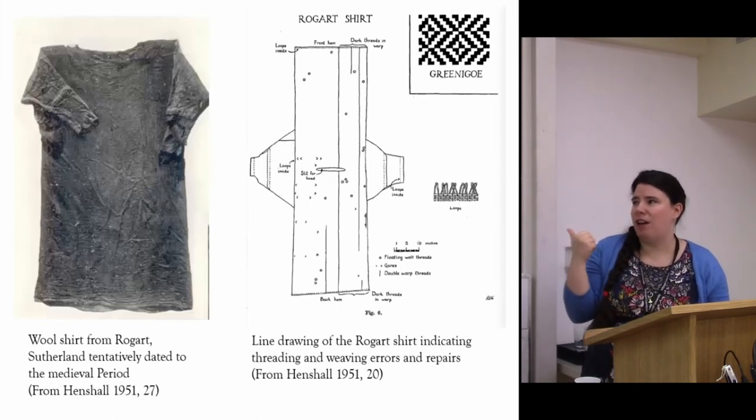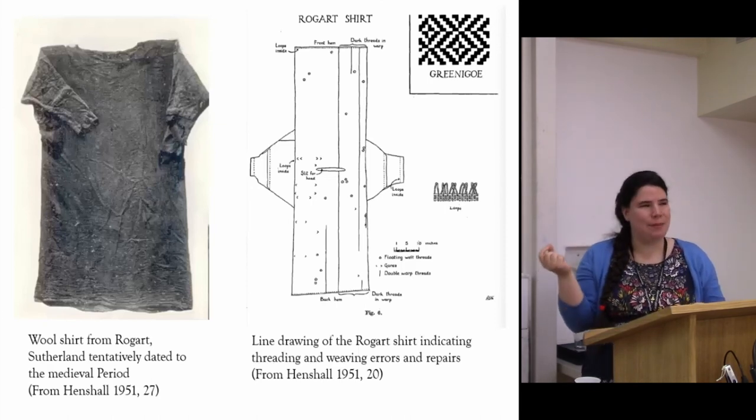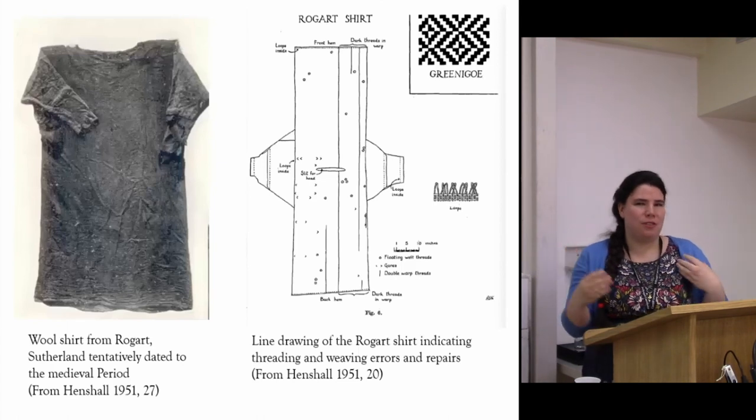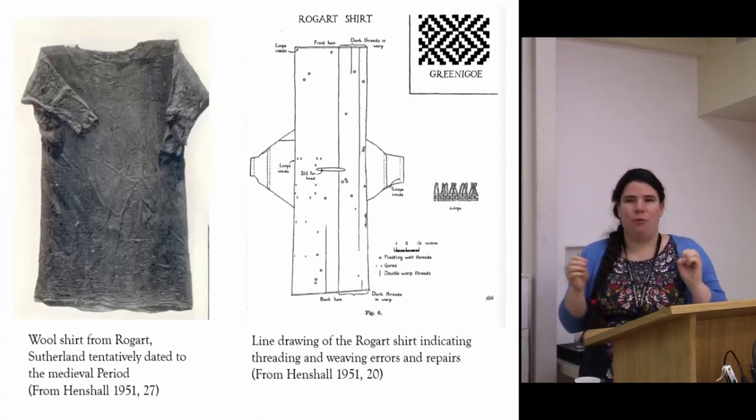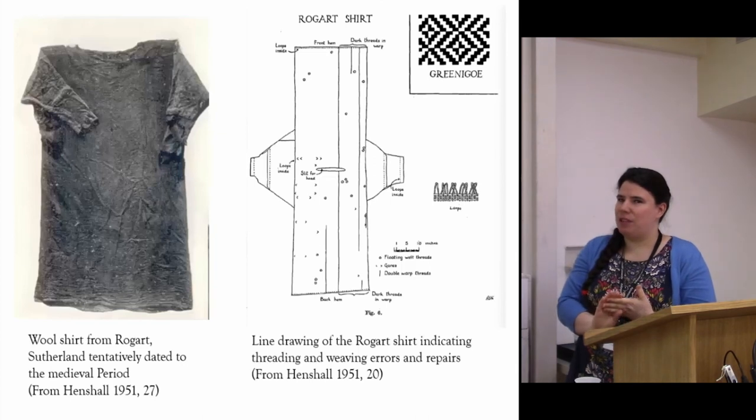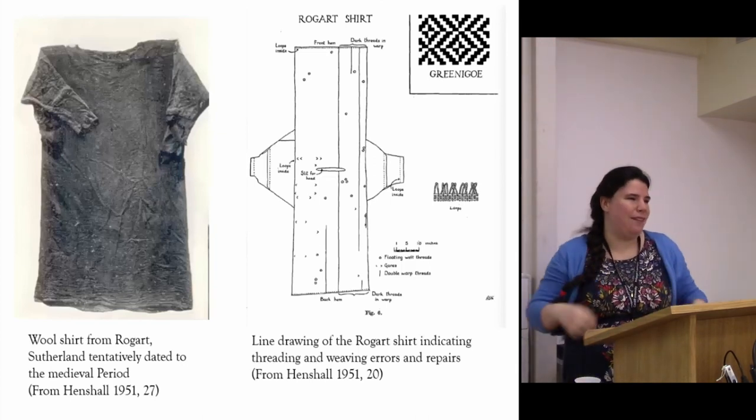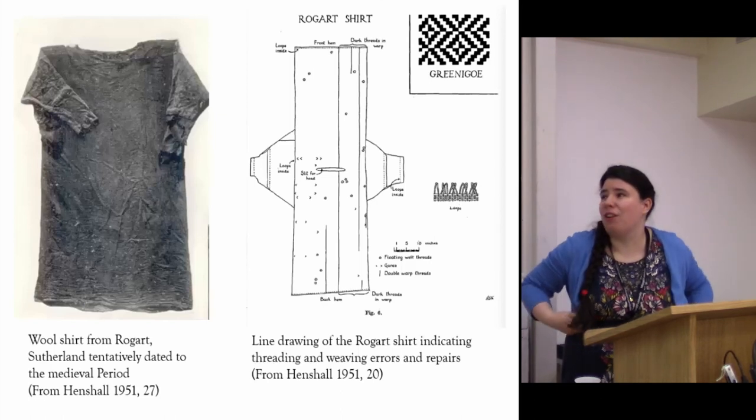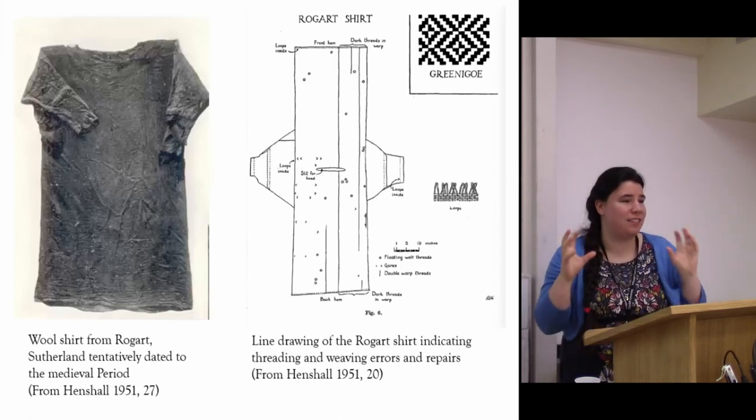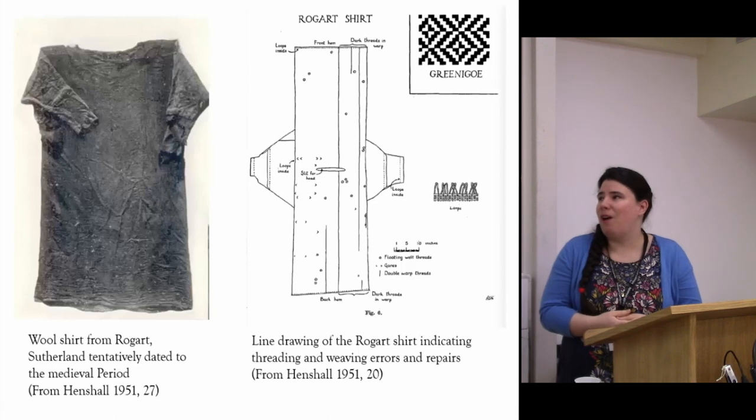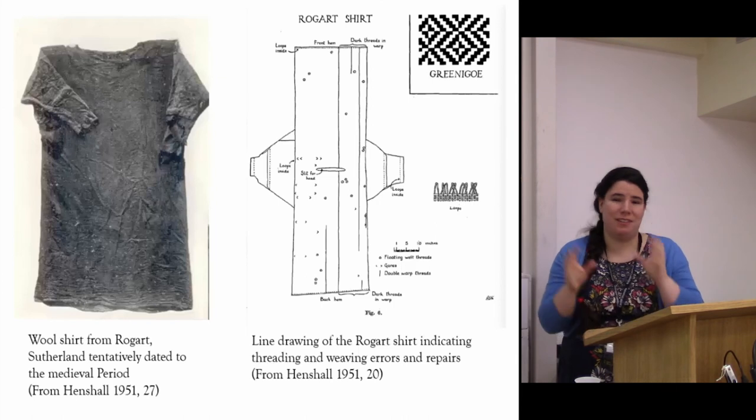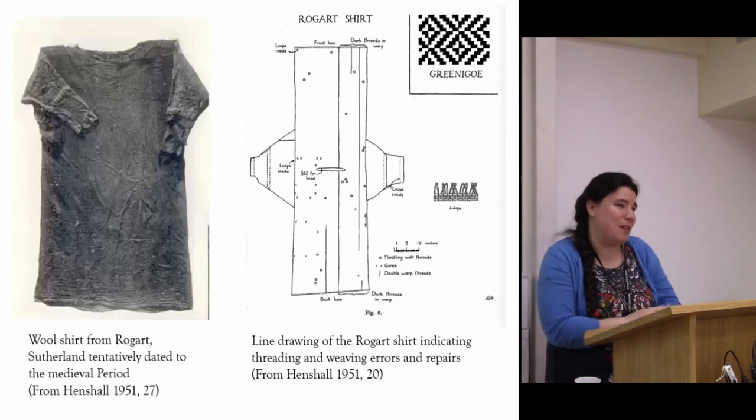It should be noted this shirt is tentatively dated to the late medieval period, but has also been described as very primitive. I think it's anyone's guess as to exactly what type of loom is being used for that. I can't say for sure, and I think that's another bit of context that would be important in assessing what's going on. But I think it can give a little bit of insight potentially into the priorities of the weaver in question.